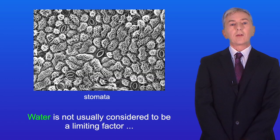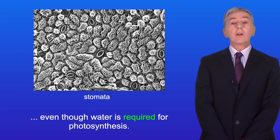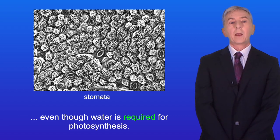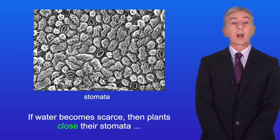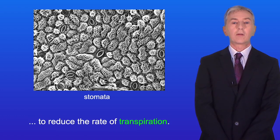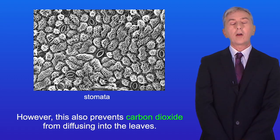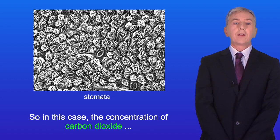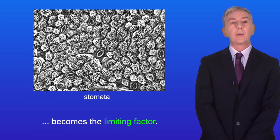Water is not usually considered to be a limiting factor, even though it is required for photosynthesis. If water becomes scarce, plants close their stomata to reduce the rate of transpiration. However, this also prevents carbon dioxide from diffusing into the leaves, so the concentration of carbon dioxide becomes a limiting factor.